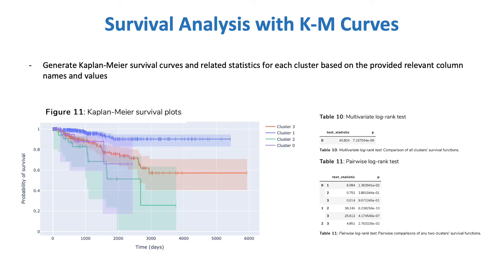I next use the clusters and relevant clinical information to generate Kaplan-Meier survival curves for each cluster, and output statistics indicating how different those curves are using both a multivariate and pairwise log-rank test. Here we can see clusters 1 and 2, and 1 and 3, have quite significantly different survival curves.